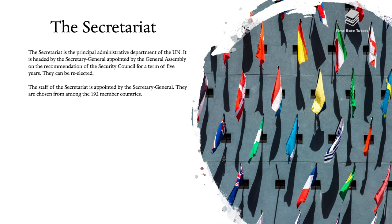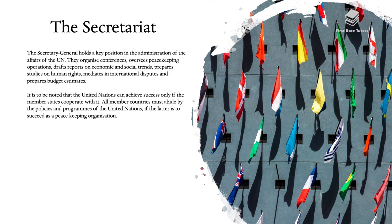The Secretariat is the principal administrative department of the UN, headed by the Secretary General, who is appointed by the General Assembly on the recommendation of the Security Council for a term of five years and can be re-elected. The staff of the Secretariat is appointed by the Secretary General and chosen from among the 192 member countries. The Secretariat holds a key position in the administration of UN affairs: it organizes conferences, oversees peacekeeping operations, drafts reports on economic and social trends, prepares studies on human rights, mediates in international disputes, and prepares budget estimates.